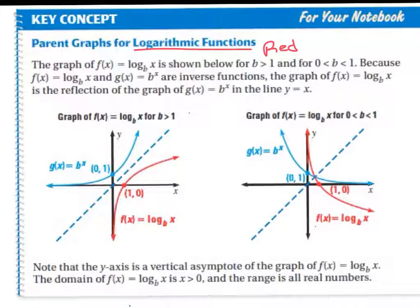The red functions are the logarithms, the log functions. Because they're inverses of each other, their domain and range switch. If that exponential function has a value of (0, 1), your log function is going to have a value of (1, 0) as an ordered pair.